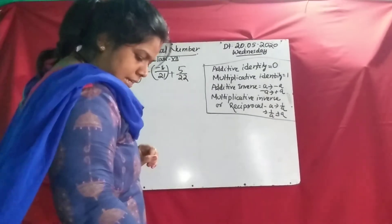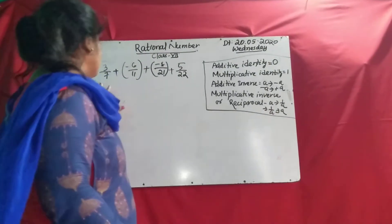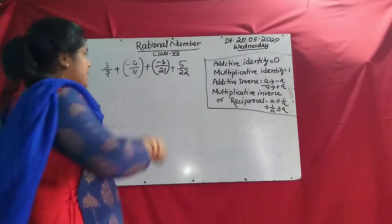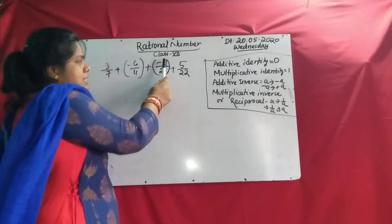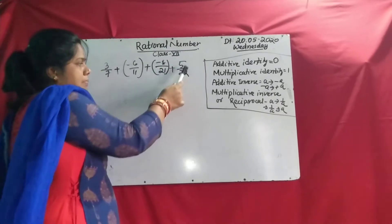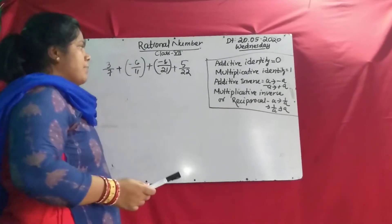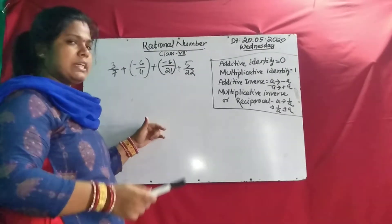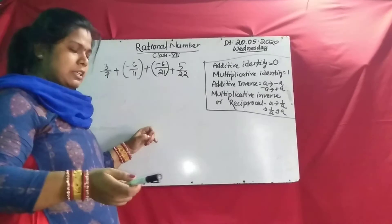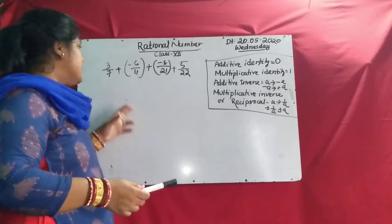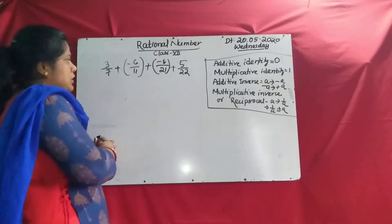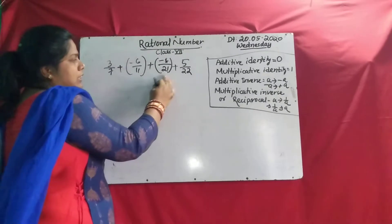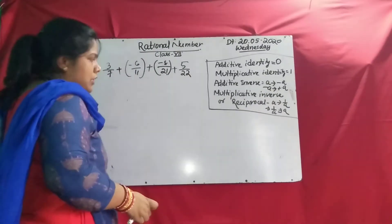In page number 9, the example given is to add: 3/7 minus 6/11 plus minus 8/21 plus 5/22. By using the associative property, first you add two numbers then the rest. Or you can find out the LCM of 7, 11, 21, and 22.